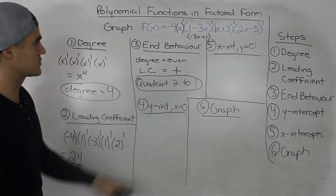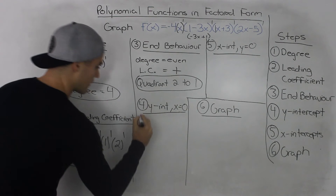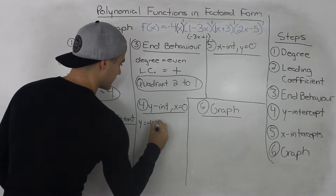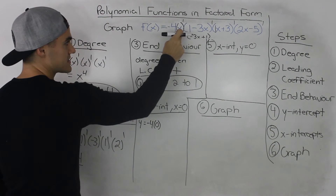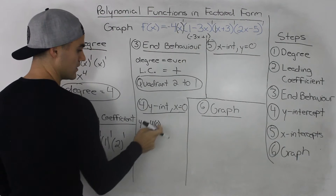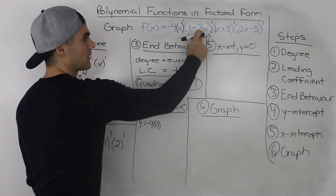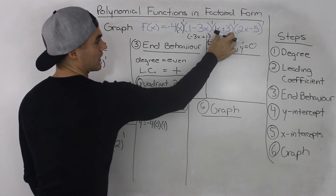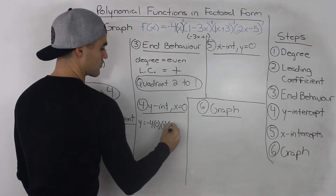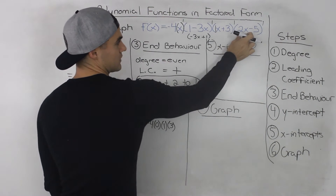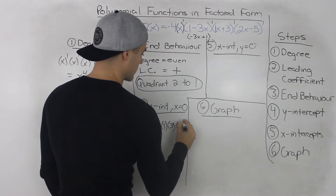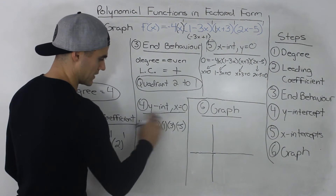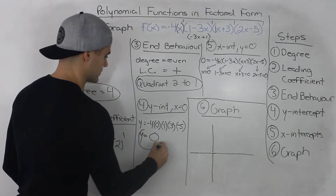Step 4: Y-intercept. We plug in 0 for all the x's. The first bracket becomes 0. The bracket 1 minus 3(0) becomes 1. The bracket x plus 3 becomes 0 plus 3, which is 3. The bracket 2x minus 5 becomes negative 5. Since one of the brackets is 0, the whole product is 0. So the y-intercept is equal to 0.